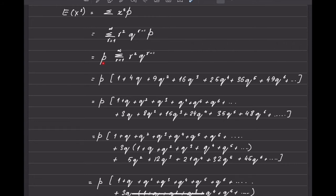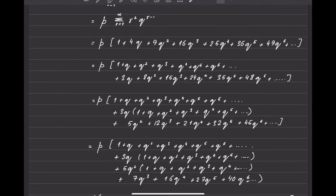Since p is not a function of r, I can take p outside. By substituting values of r I can write the summation of r squared times q^(r-1) as 1 plus 4q plus 9q squared plus 16q cubed plus 25q to the 4th, and so on. Now I'm going to break this series up.